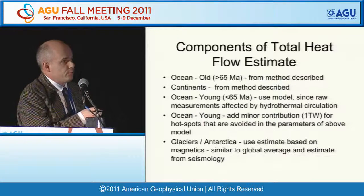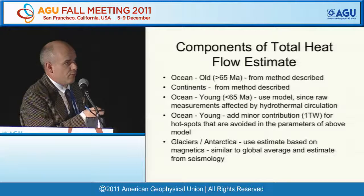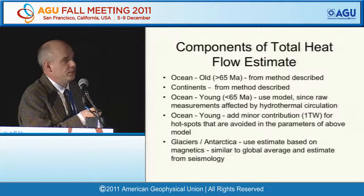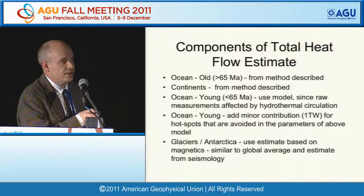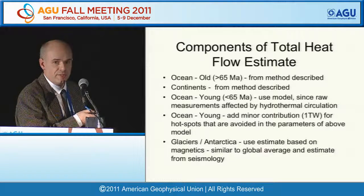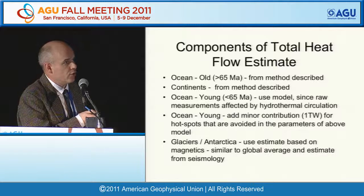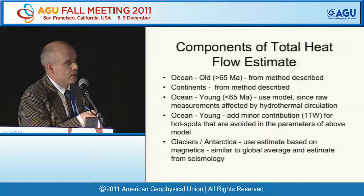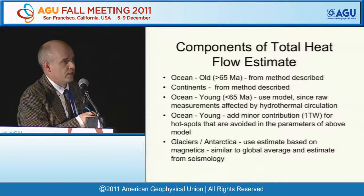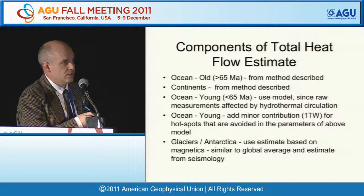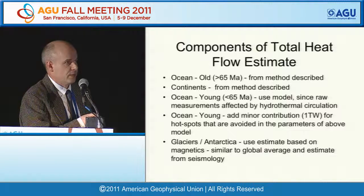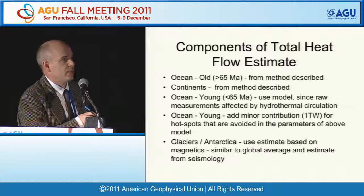The actual estimate is made up of five components, the first three being most important. First, the old oceans—older than 65 million years—produced by the method just outlined. Second, the continents, again by the same method. Third, for young oceanic crust younger than 65 million years, we used a model since raw measurements are affected by hydrothermal circulation.